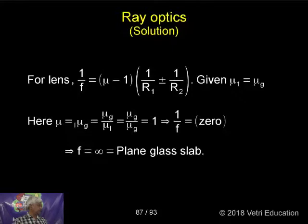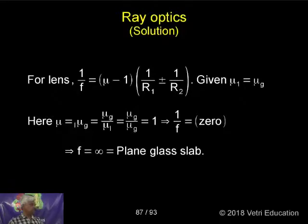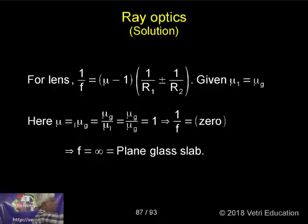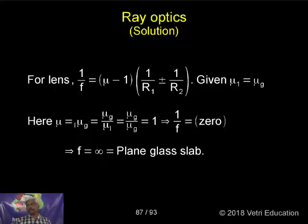Here, μ is equal to μ_g / μ_l. Therefore, μ_g / μ_l = μ_g / μ_g = 1. So 1/f = 0, which means f = infinity — plain glass slab. Whenever the focal length becomes infinity, that surface is not a curved surface; it is a plain surface.